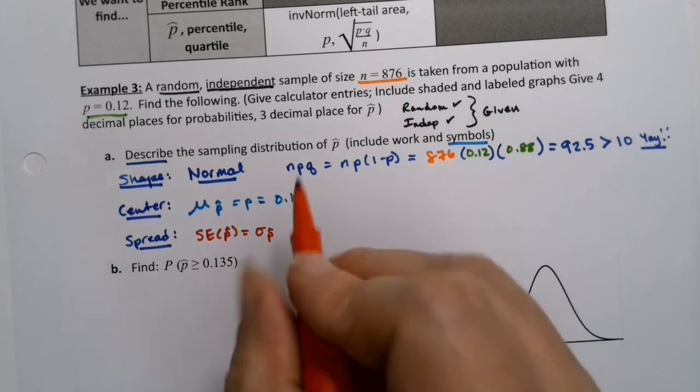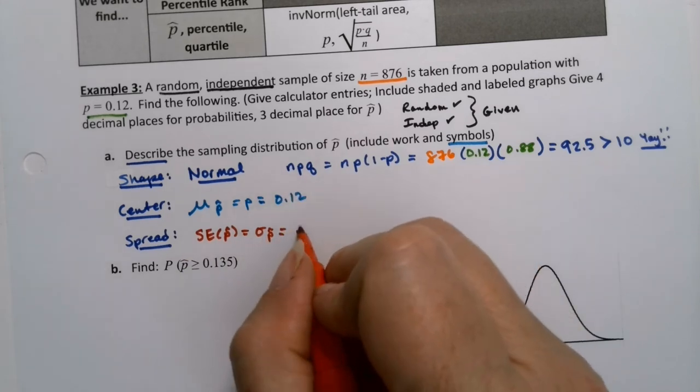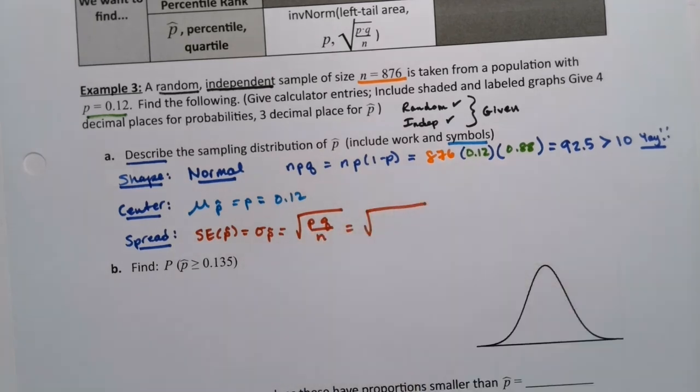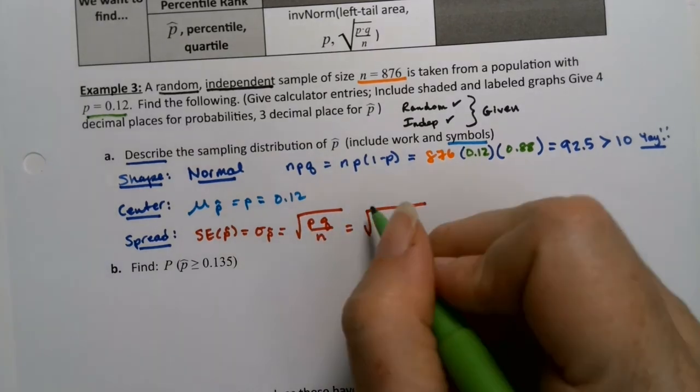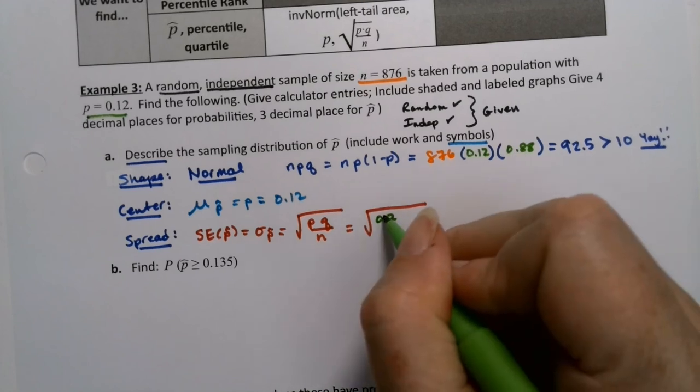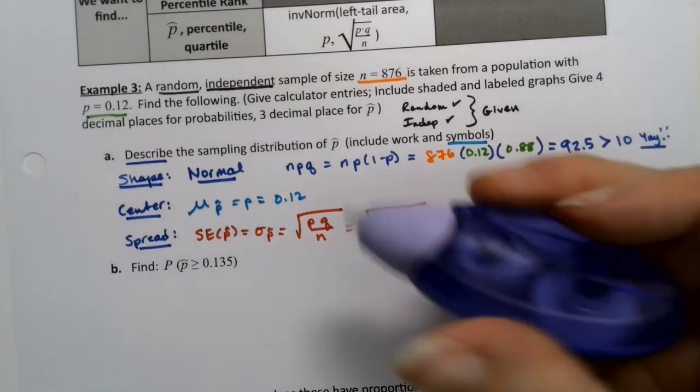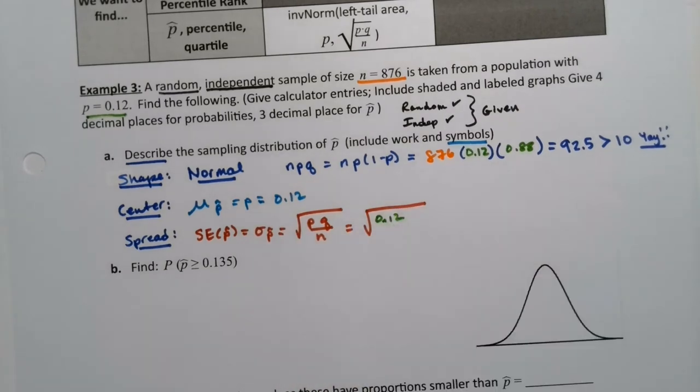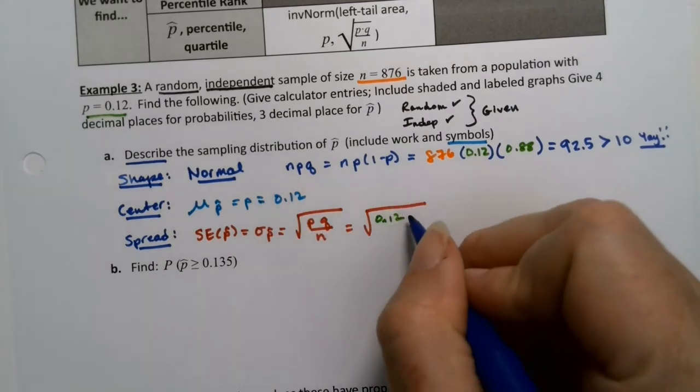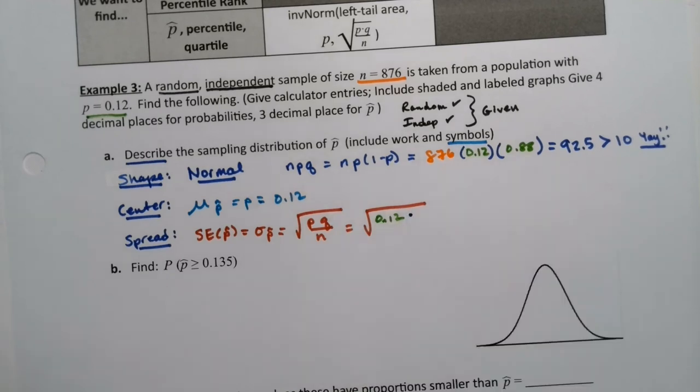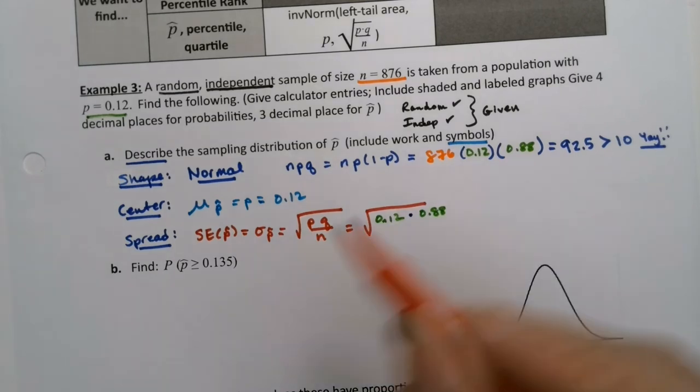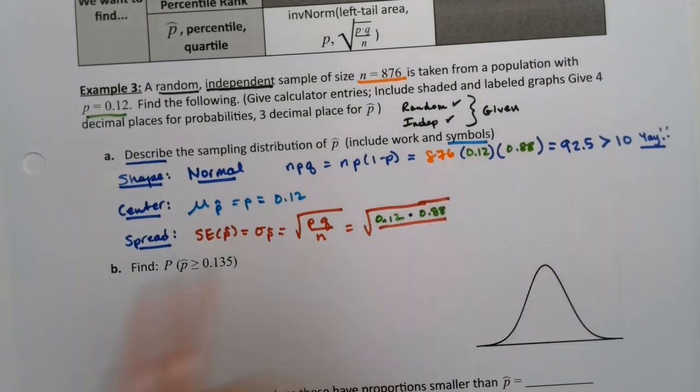It's the square root of pq over n, which would be the square root, for us, p was 0.12, and then q, which was 0.88. So I could put a little times dot in here, and q is 0.88, and we're going to divide that by n, which was 876.